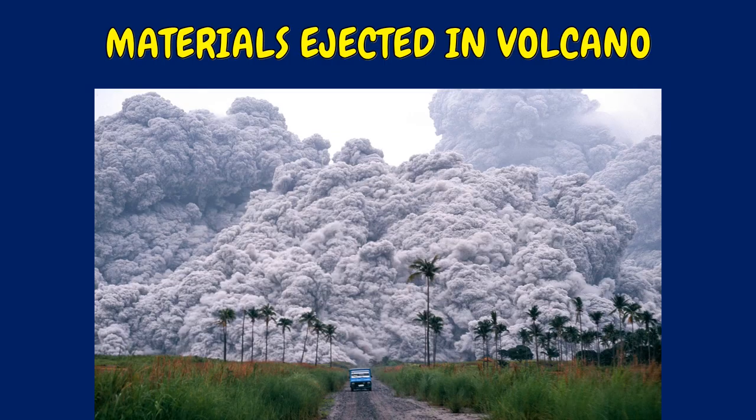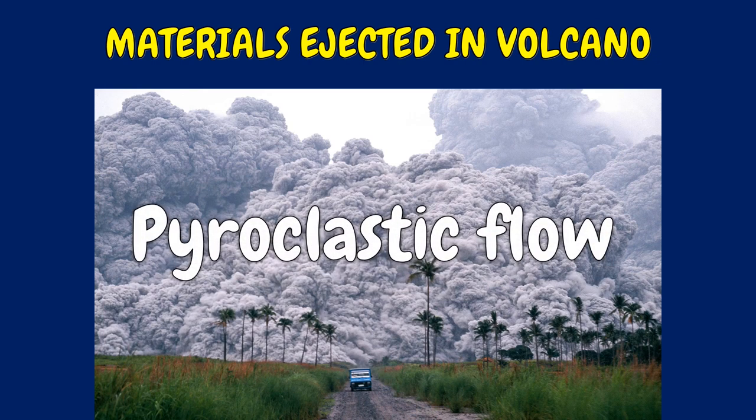There are various materials ejected in a volcanic eruption. A pyroclastic flow is a dense, fast-moving flow of solidified lava pieces, volcanic ash, and hot gases. It occurs as part of certain volcanic eruptions. A pyroclastic flow is extremely hot, burning anything in its path, and may move at speeds as high as 200 meters per second.